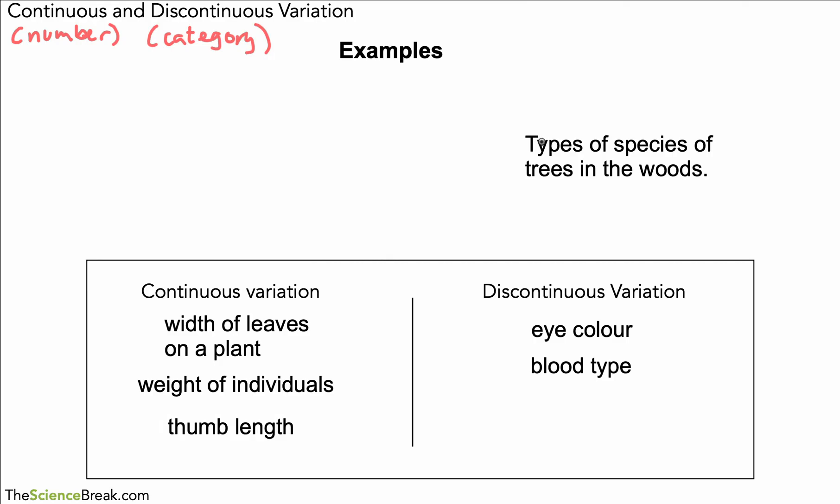Thumb length again, a number value, millimeters or centimeters, goes into continuous. And the types of species of tree in the woods—so you could say oak tree, elm trees, and whatever other trees you might have—these are categories, these are not given numerical values, so that would go in the discontinuous variation column.